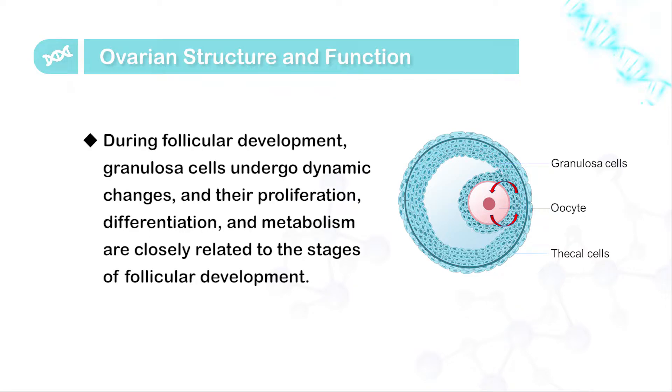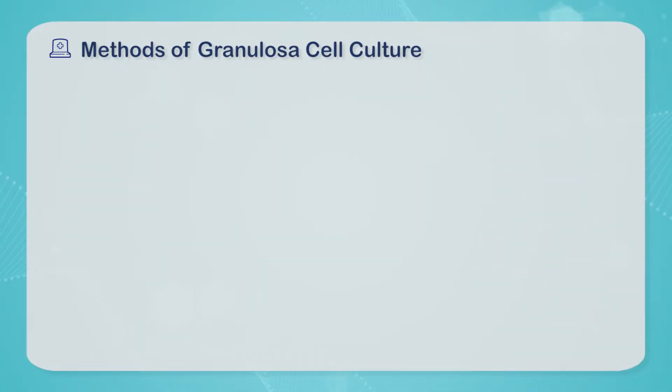During follicular development, granule cells undergo dynamic changes, and their proliferation, differentiation, and metabolism are closely related to the stages of follicular development. In order to investigate the mechanism of reproductive endocrine regulation of granule cells during follicular development, an in vitro culture system of granule cells has been established. Next, we will learn more about the method of granule cell culture in vitro.